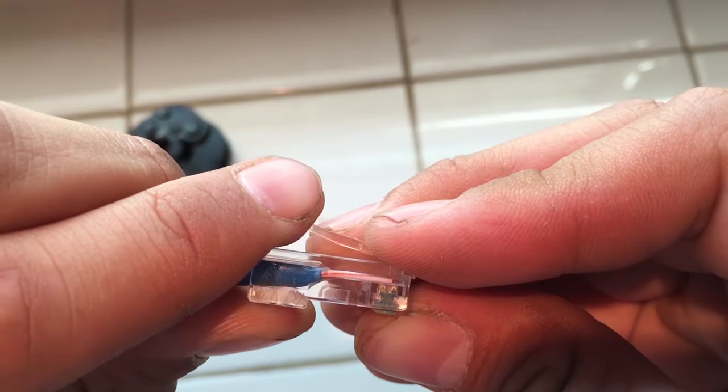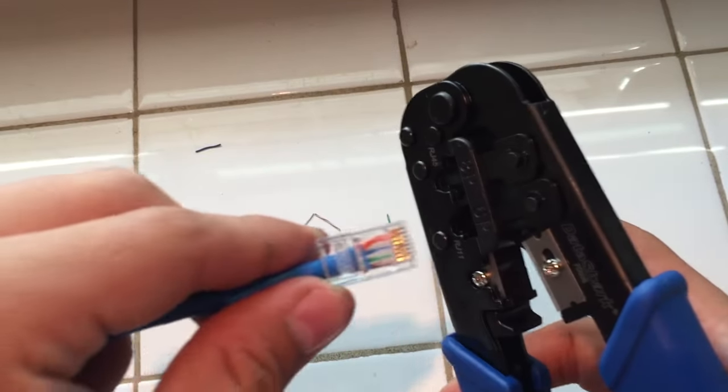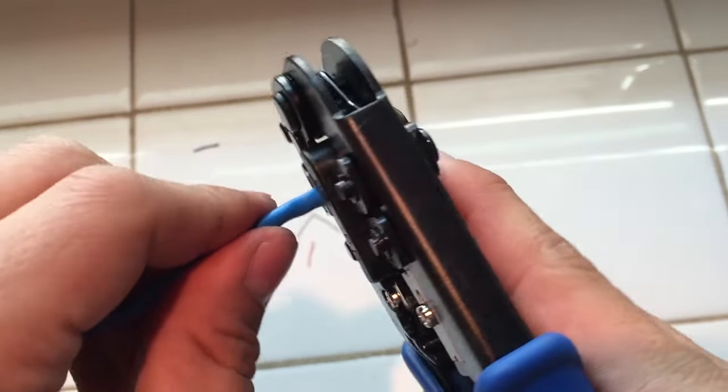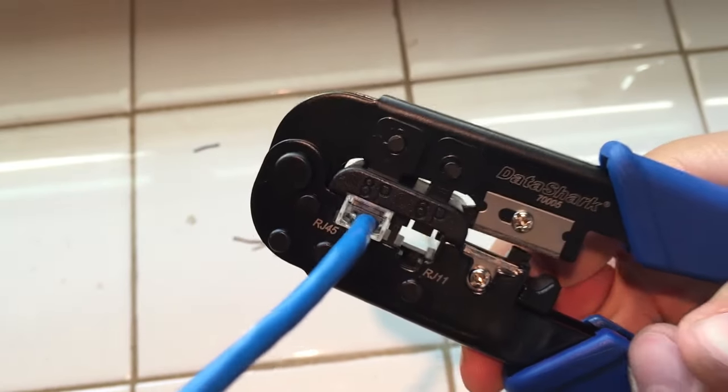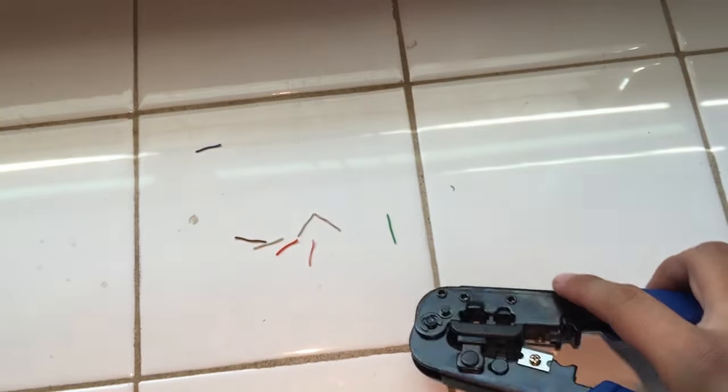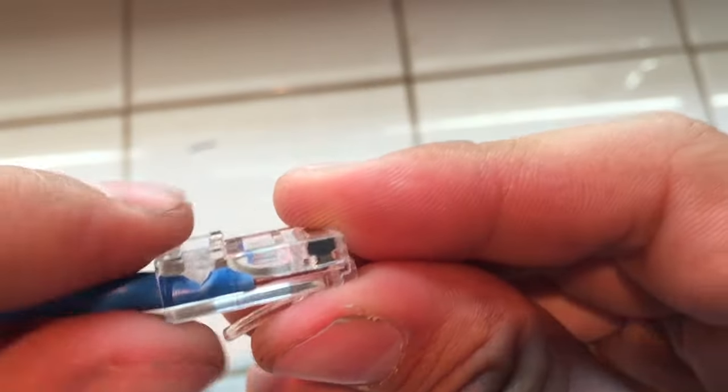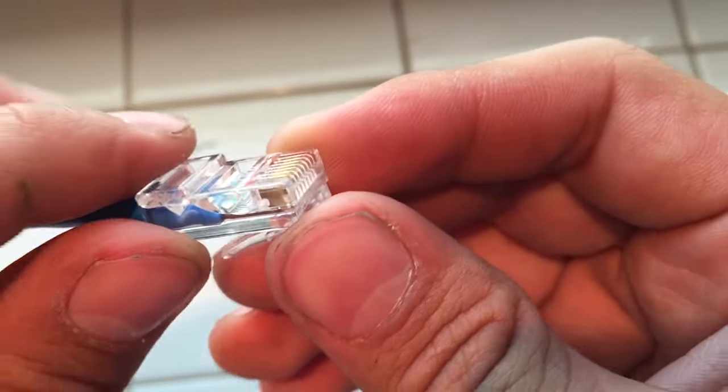Once it's securely in, grab your crimp tool and insert the jack into it. After it's in place, press down on the crimp tool. As you can see, now the wires are securely in place and the pins are making contact with the wire.